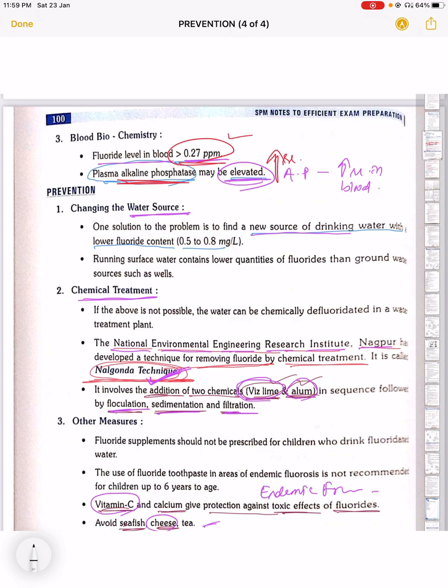How to prevent endemic fluorosis? You have to change the water source - choose water with lower fluoride content. Chemical treatment, otherwise known as the Nalgonda technique, is deployed by the National Environmental Engineering Research Institute, Nagpur. They add chemicals like lime and alum to reduce fluoride through flocculation, sedimentation, and filtration.